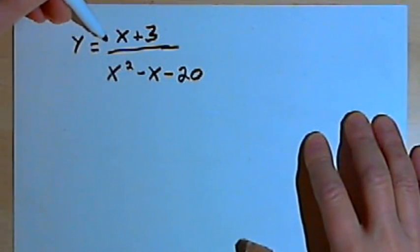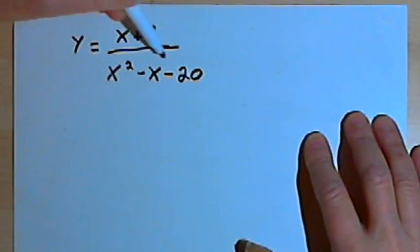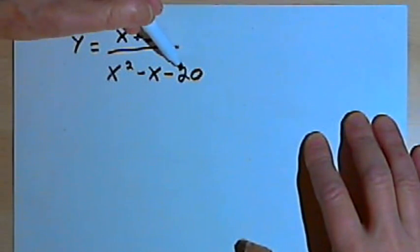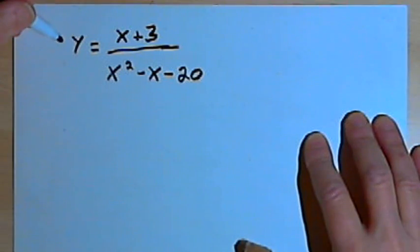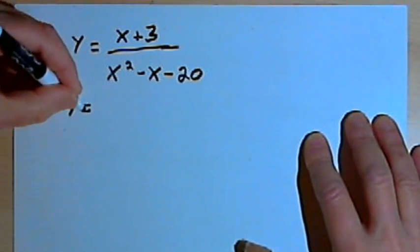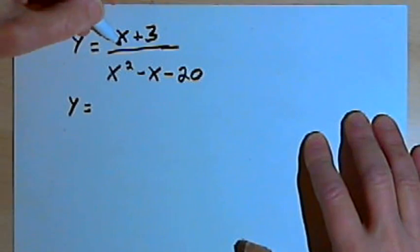Here I've got y equals x plus 3 over x squared minus x minus 20. When you're dealing with rational functions, the first thing to do, usually, would be to factor them as much as you can.